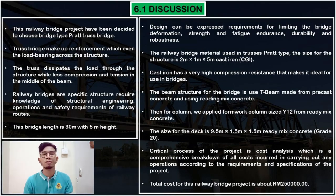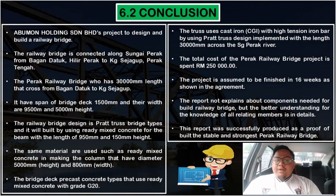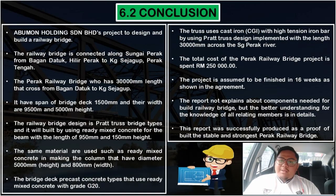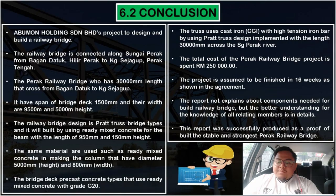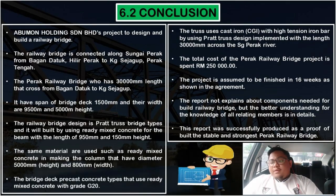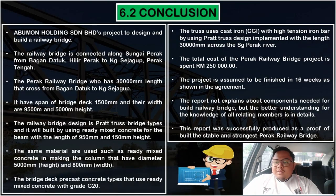For the conclusion, our group has designed and built the Perak Railway Bridge with dimensions of 30,000mm length, 5,000mm height, and 9,500mm width. Using the Pratt truss bridge, we found 21 members in the trusses. The total cost for the Perak Railway Bridge project is RM100,000. We assume the project can be completed within the stipulated weeks as shown in the agreement. The report explains the components needed to build the railway bridge and provides detailed knowledge for all related members. The report was successfully produced as proof of the stable and strongest Perak Railway Bridge.